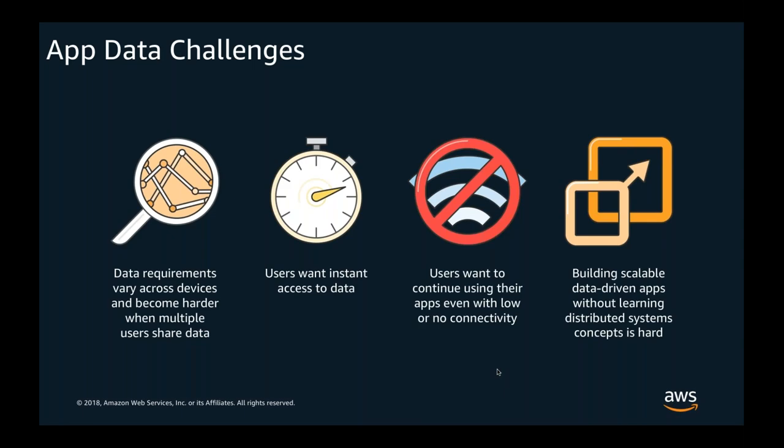When building web and mobile apps, developers face different challenges in managing application data. Data requirements vary across different devices and become exponentially harder when multiple users share data. Users want instant access to their content and want to have access to their data when they're offline — and they want the data to be automatically synchronized in the background when the network becomes available again. If you're a front-end developer, how do you make it easier to manage data without learning back-end or distributed systems concepts?